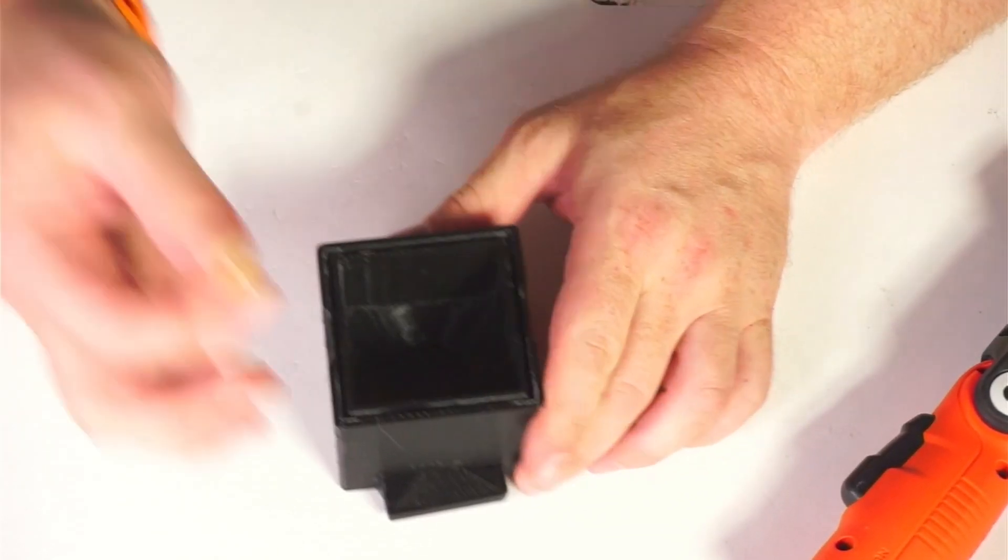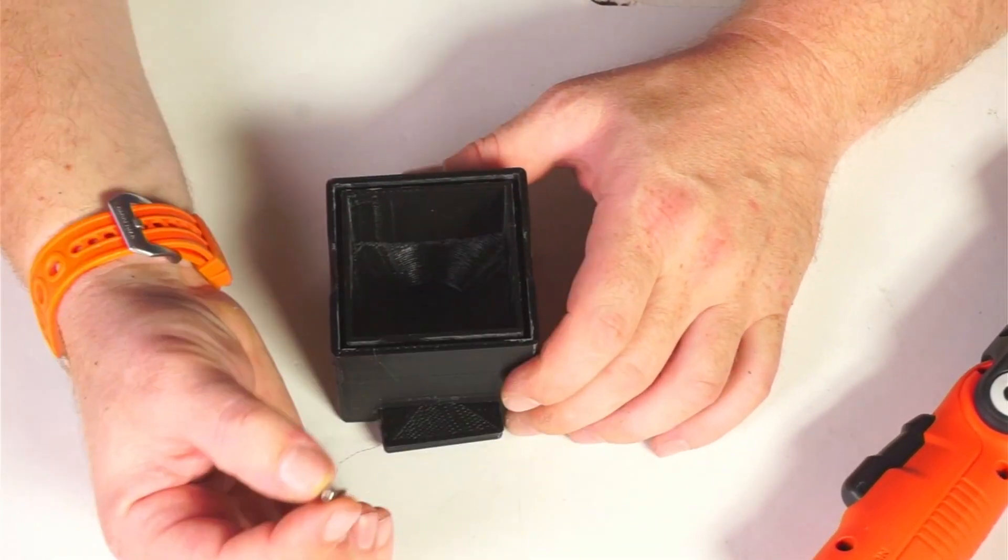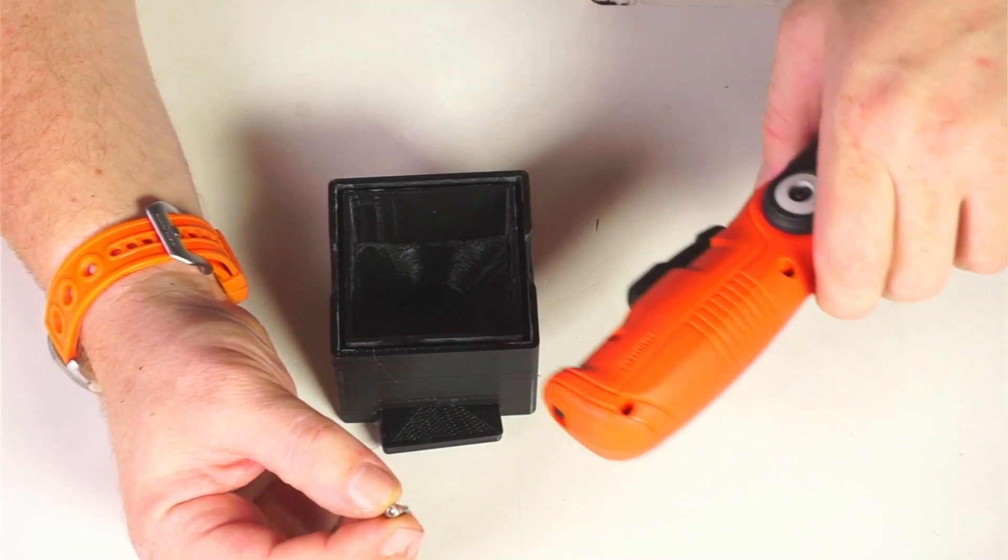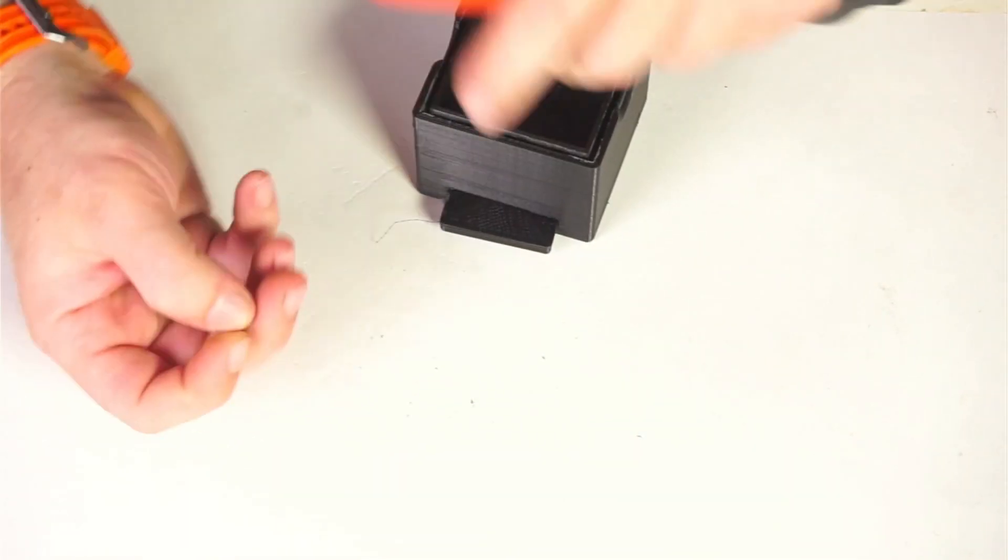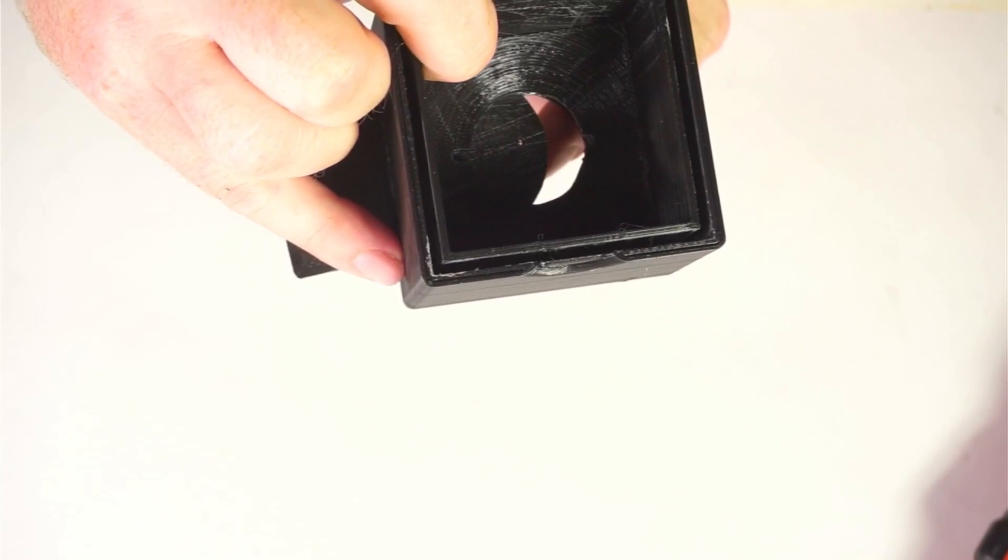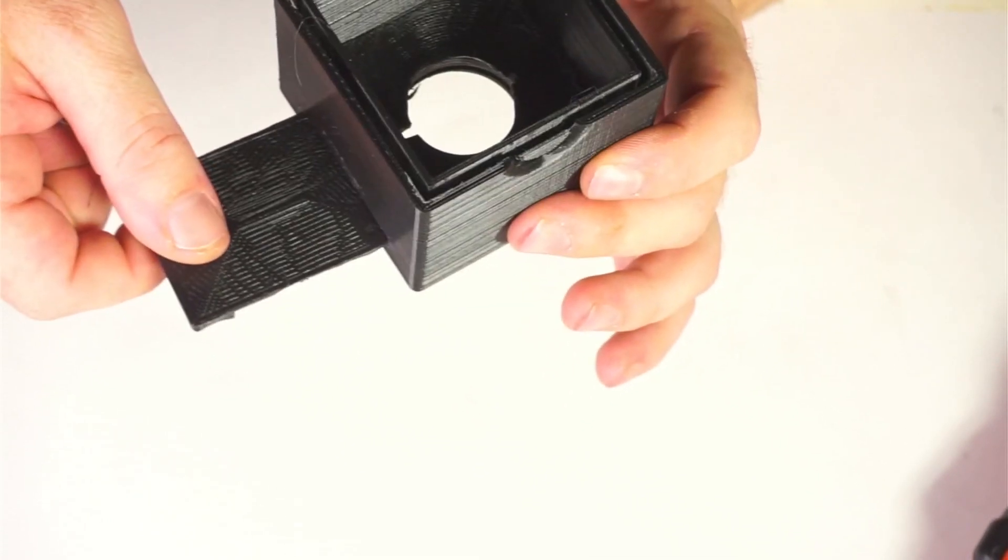Okay, so in here, you're going to take one real short screw M3 by six or eight millimeters and put it in the tip of this hole here so that the dark slide can't come out.